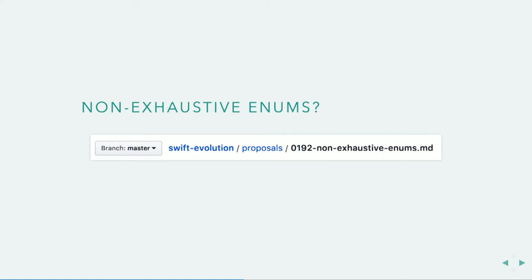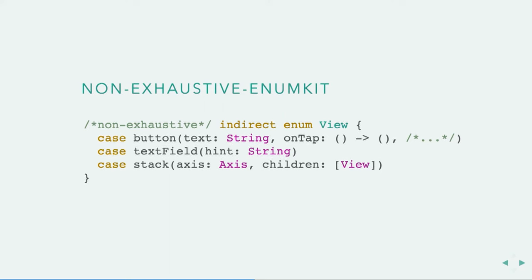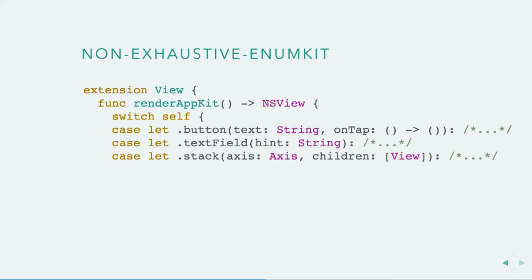What about non-exhaustive enums? This is a new proposal about how enums, by default, will have the ability to add new cases from outside the modules where they're originally declared. So we can try that — an indirect enum that's non-exhaustive, iterating through all possible views. From outside the library we can add a new case, which is great. But when we go to implement the renderer, we get stuck, because we eventually have to handle the unknown cases, and we won't know what case we're in, so we can't create an NSView or a UIView. So this is not going to work.